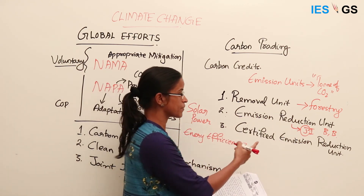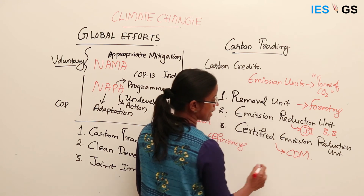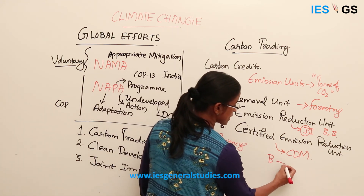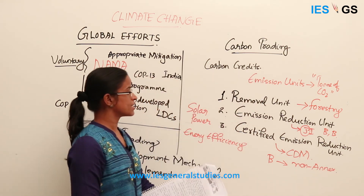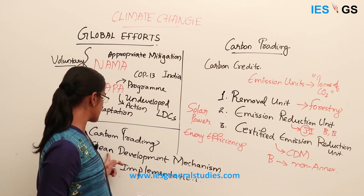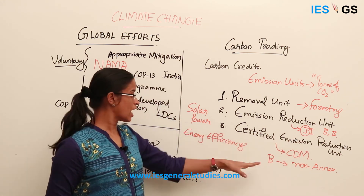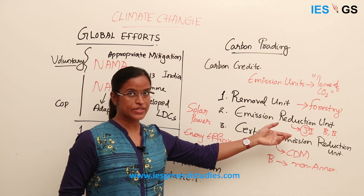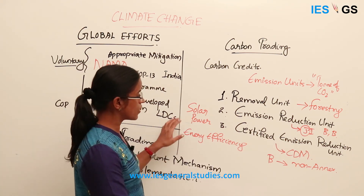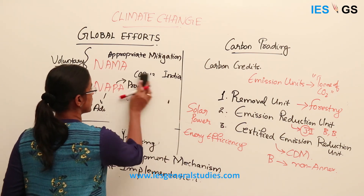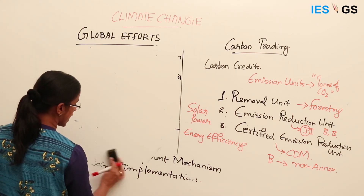Certified emission reduction units are achieved by the clean development mechanism. CDM is implemented by Annex B countries or any other non-annex countries, who undertake projects under this mechanism and receive certified emission reduction units based on how much emission reduction the project has achieved in the implementing country. All these transactions are registered in a log — there is a repository for carbon trading transactions — and all are registered and monitored.